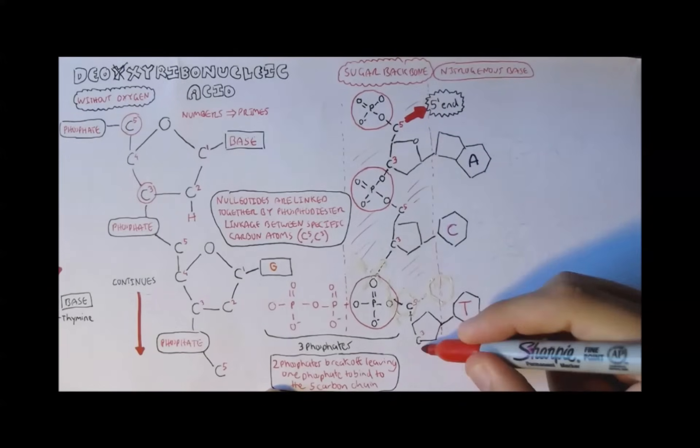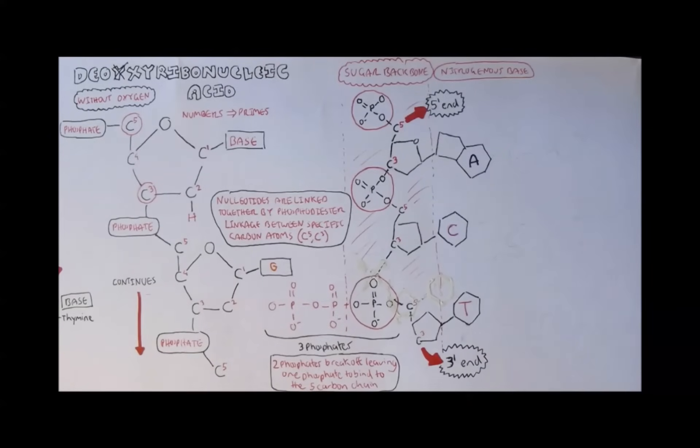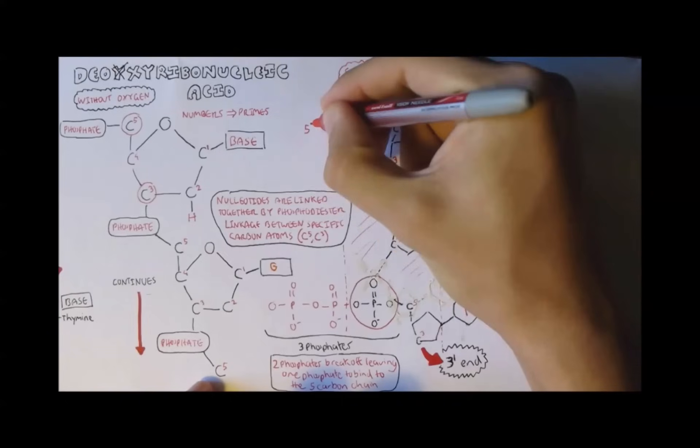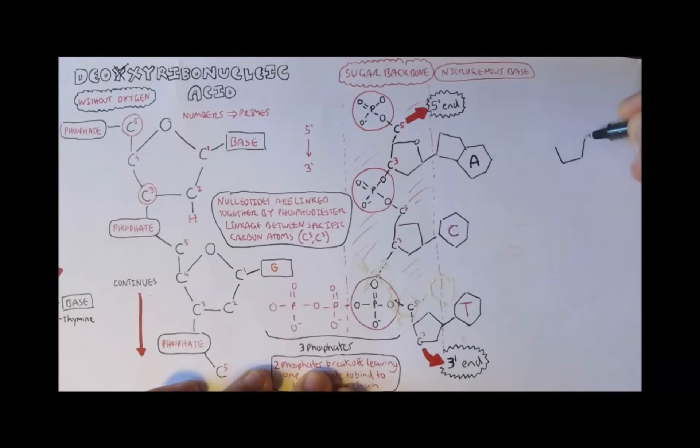So as you can see from this single strand of DNA, the beginning is always a phosphate attached to the fifth prime carbon. And so we can call it the 5' end. And the bottom is always a 3' end. Why are these 3' and 5' important? Well, it's because DNA synthesis is always done from a 5' to 3' end.